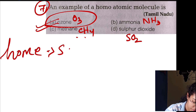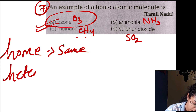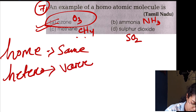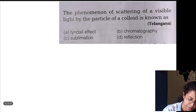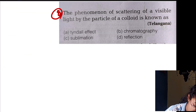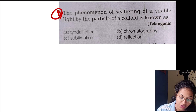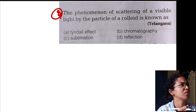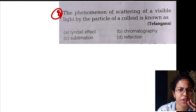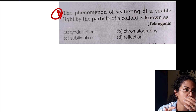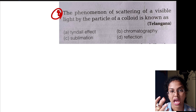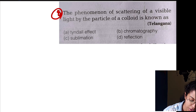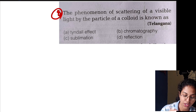O3 with all the same atoms is a homo-atomic molecule. Next question: the phenomenon of scattering of visible light by the particles of a colloid is known as what? When asked about colloidal substances like milk, lemon juice, different liquids — these are heterogeneous mixtures, colloidal solutions. The light scatters through the colloidal substances.